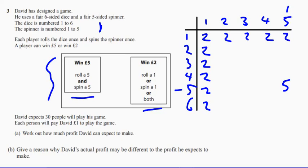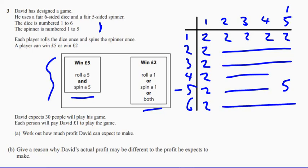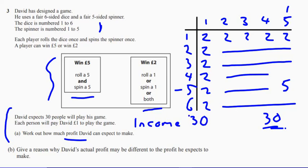All the other possibilities, we would not win anything. So how many different possibilities are there? Well, there are 30 different possibilities. The easy way to work out how much money we're expecting David to make — the income is going to be 30 pounds income. And he's going to take away how much he's expecting to pay out. We've just seen from here, look, there are 30 different possibilities.